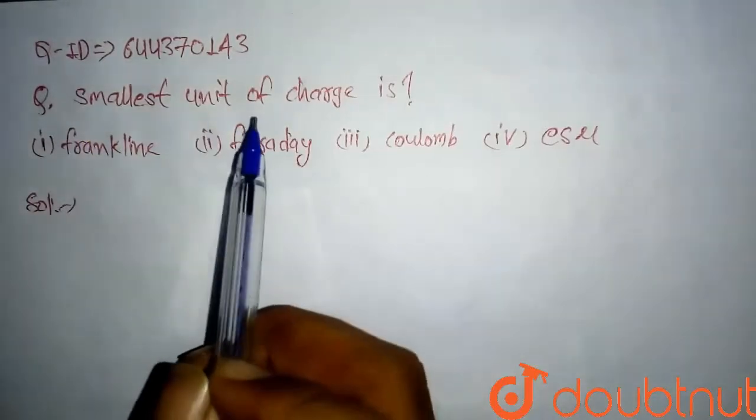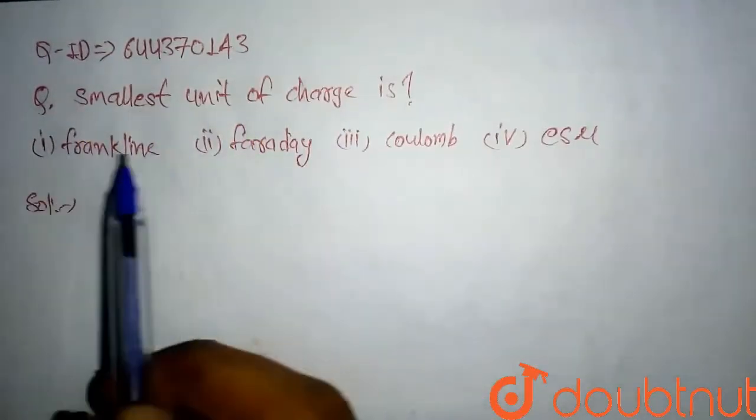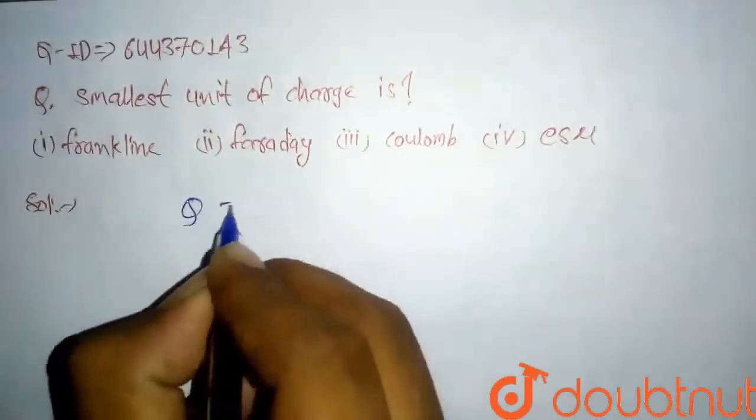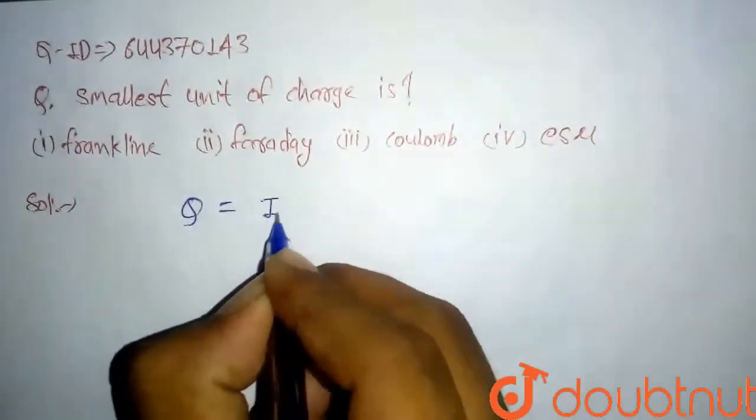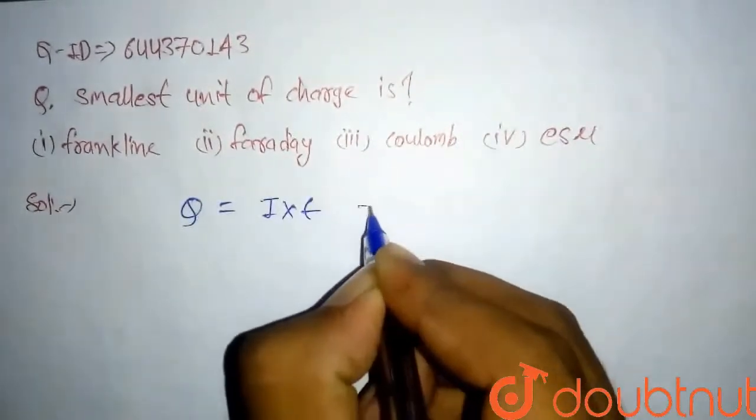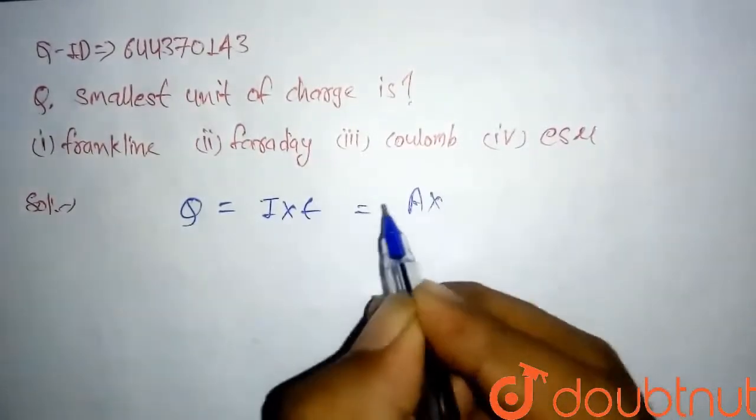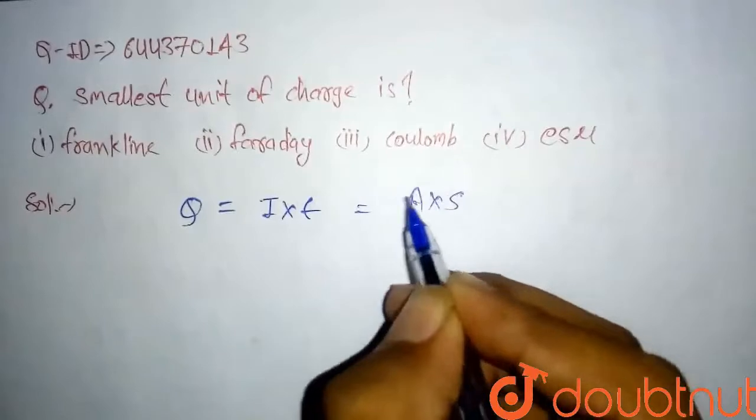These are four options. We know that the charge is given by current into time, so here we can say the current is measured in ampere and time is measured in second. This is one unit.